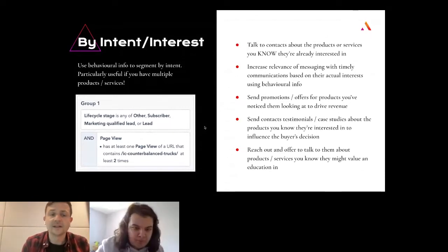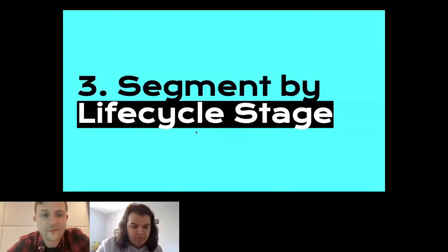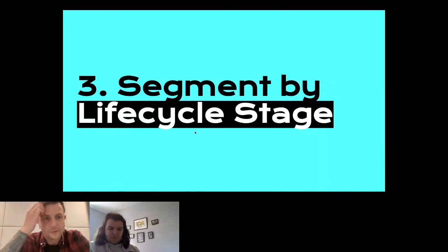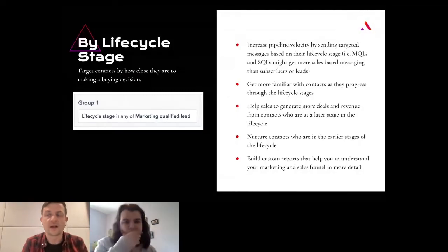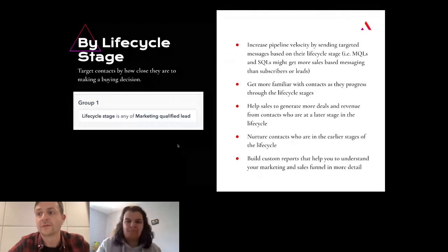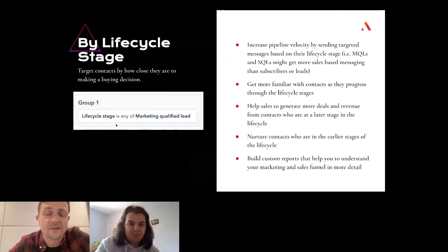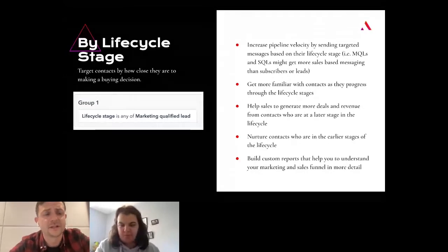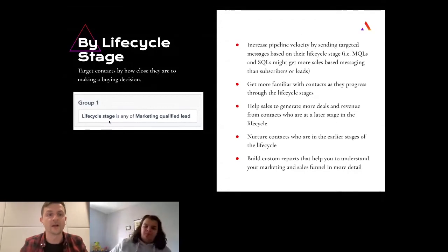The third segment is by lifecycle stage — something everyone who uses HubSpot will probably be very familiar with in terms of your marketing and sales pipeline. Segmenting by lifecycle stage is really important because we don't want to talk to all contacts at different stages in the same way. We're trying to increase pipeline velocity. The example in HubSpot is simple: set up a group where the filter is lifecycle stage — any of marketing qualified lead, sales qualified lead, lead, or subscriber — so you can see everyone in your database and get an outline of your pipeline in these lists.